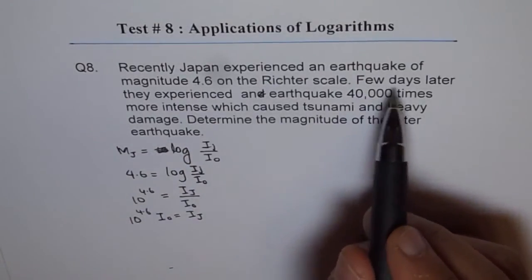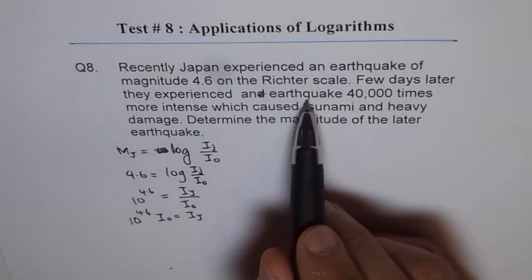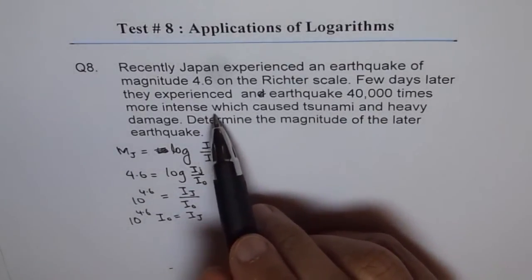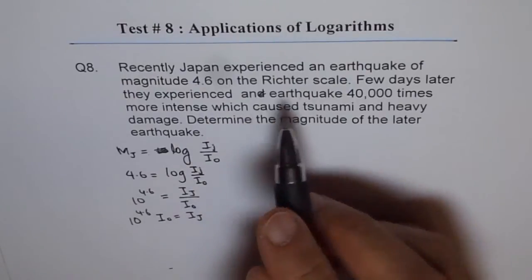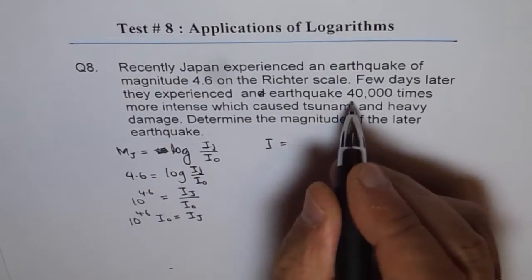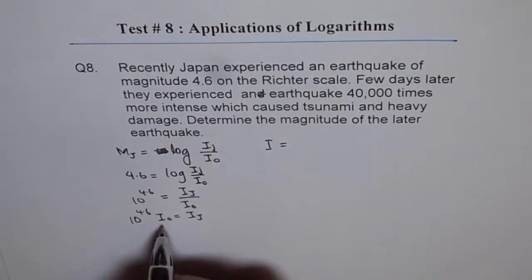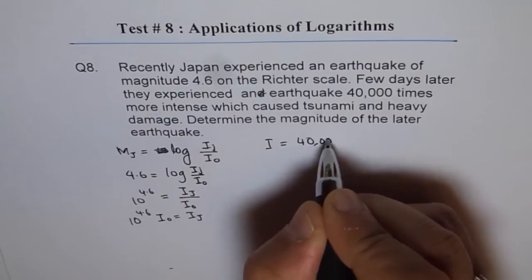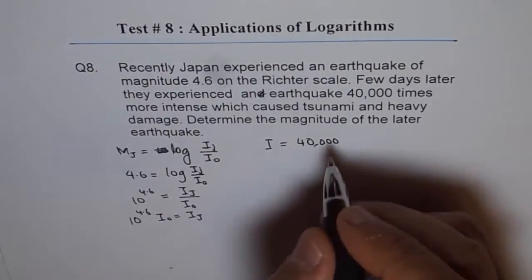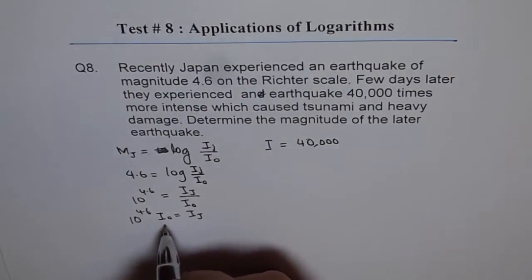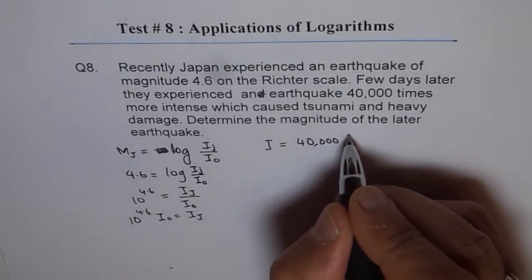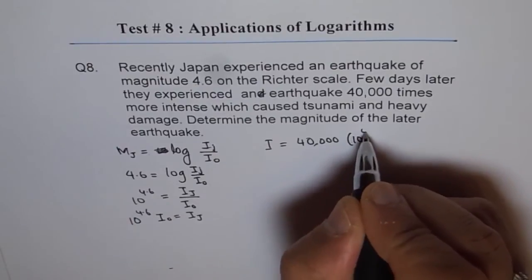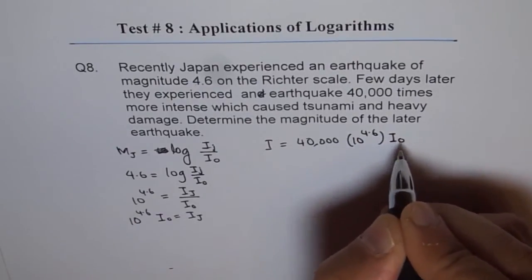Few days later they experienced an earthquake 40,000 times more intense. Let the later intensity be I. So I is 40,000 times Ij, which is 40,000 times 10 to the power of 4.6 times I0.